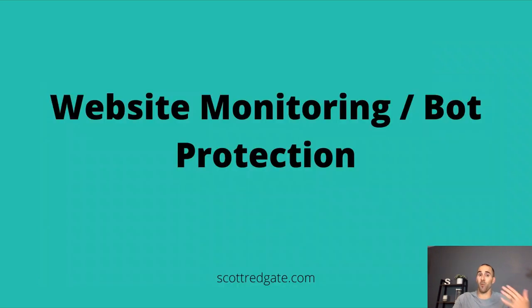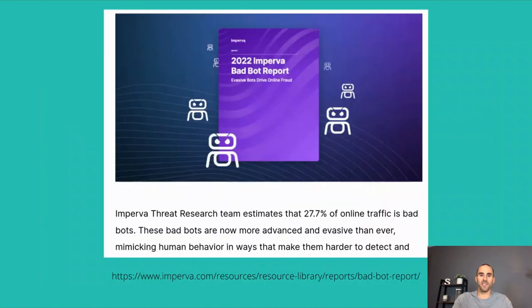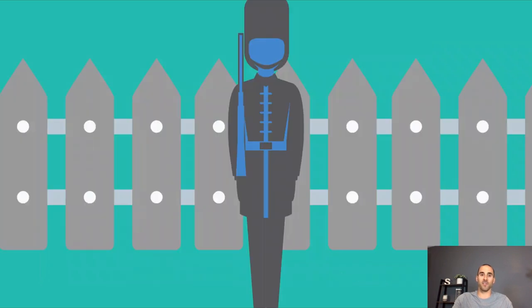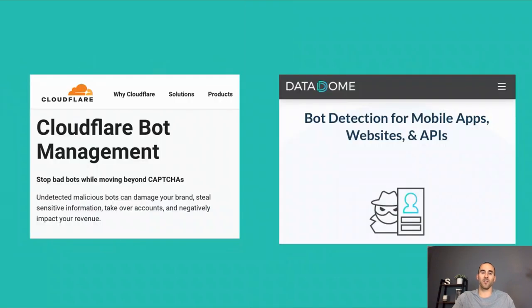The next tip is setting up a website monitoring service or bot protection service. This refers back to the stat from the beginning — that 27.7% of online traffic is from bad bots. Think of these services as a guard in front of a security gate for your website that stops a lot of this traffic from ever getting to your site. If you stop that bot or spammer from ever reaching your website, they won't be able to fill out that lead form, which could count as a conversion inside Google Ads. A couple of options are DataDome and Cloudflare, but a quick Google search for "bot management website monitoring service" will show dozens of options.